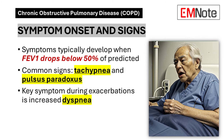The insidious nature of COPD means that symptoms typically become noticeable only when significant lung function has already been lost. Specifically, symptoms often develop when the forced expiratory volume in one second, FEV1, drops below 50% of the predicted value. Common signs include tachypnea and pulsus paradoxus, reflecting increased work of breathing and altered intrathoracic pressures. During acute exacerbations, patients experience a marked increase in dyspnea, often described as a sensation of suffocation or chest tightness.